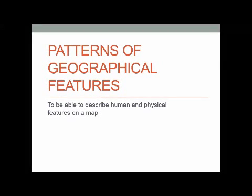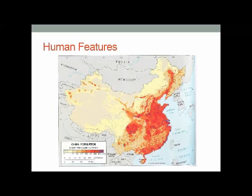Hi, welcome to this screencast looking at patterns of geographical features. The aim of this is to very quickly help you describe human and physical features on a map. Theoretically in the exam they can give you any type of map they want to, and therefore it's just asking you to describe what patterns you can see. I'm going to look at two different examples: a human features map and a map which should be very familiar to you, which is the human population distribution of China.